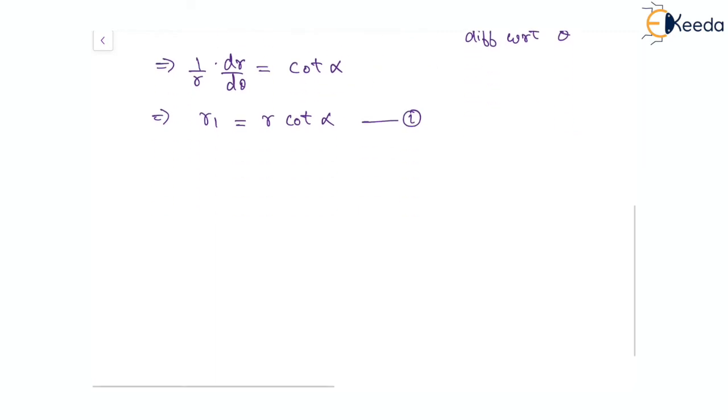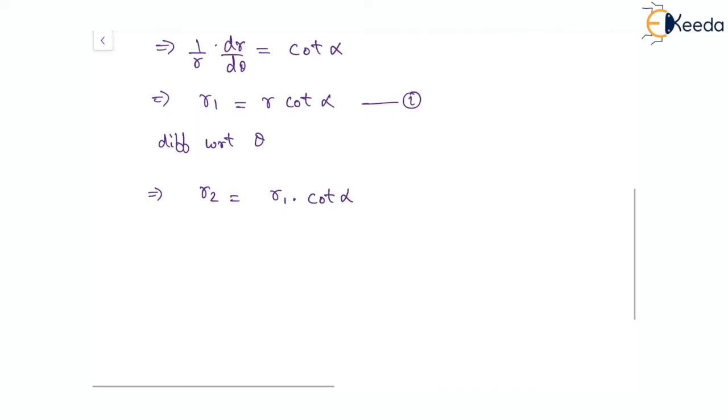If we differentiate this again with respect to theta, we will have r₂ equal to r₁ times cot alpha. Putting the value of r₁ here, that will be r cot alpha times cot alpha, which is r cot squared alpha. So r₂ is r cot squared alpha.